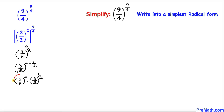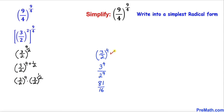Now let's focus on the part (3/2)^4. This simplifies to 81/16. Therefore I can write this expression as 81/16 times (3/2)^(1/2).